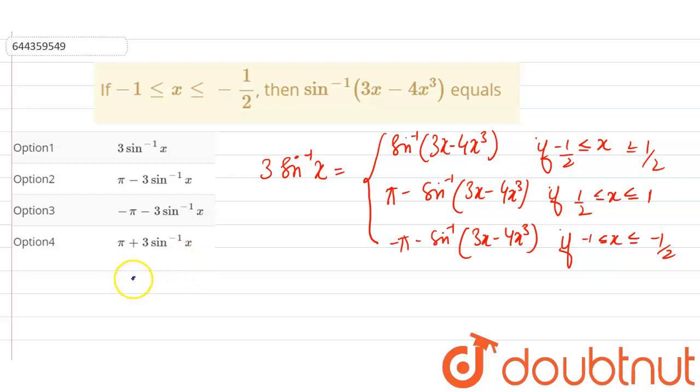equation should be 3 sine inverse x is equal to minus pi minus sine inverse 3x minus 4x cube. Right, so in that case we have to find the value of this sine inverse 3x minus 4x cube.